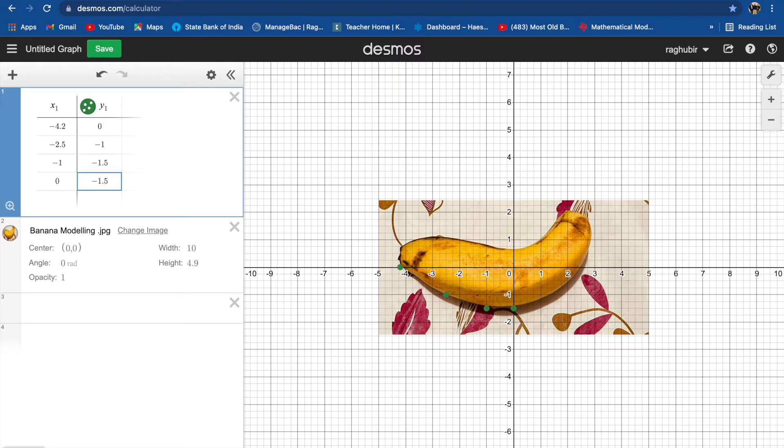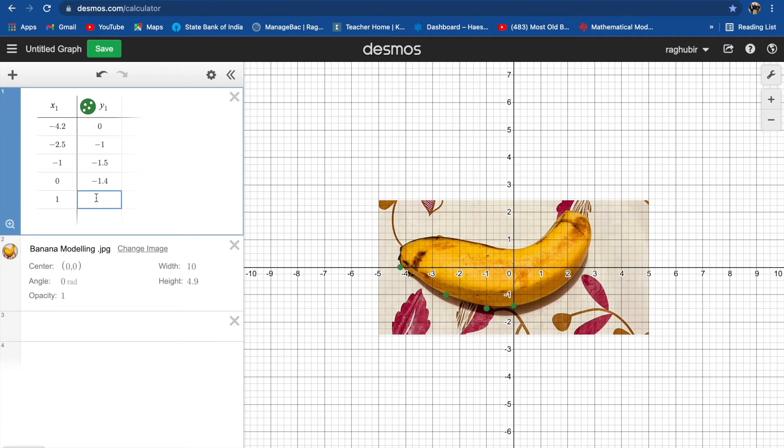Then we have next point as X is one and Y is negative 1.2 approximately. Then next point we can say is X is 1.5, Y is negative 1.